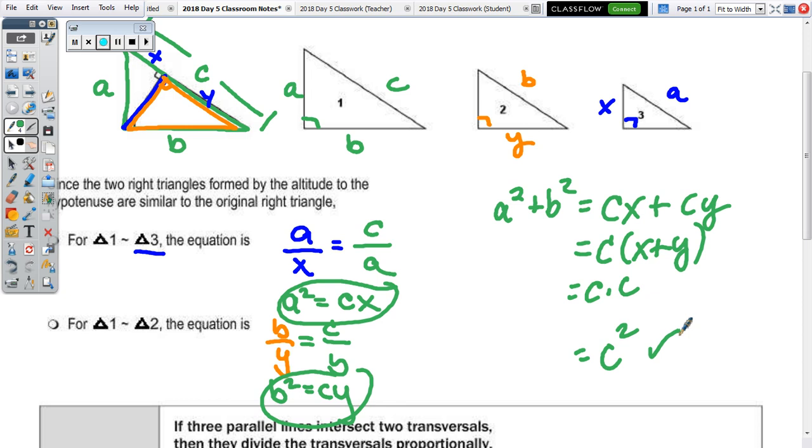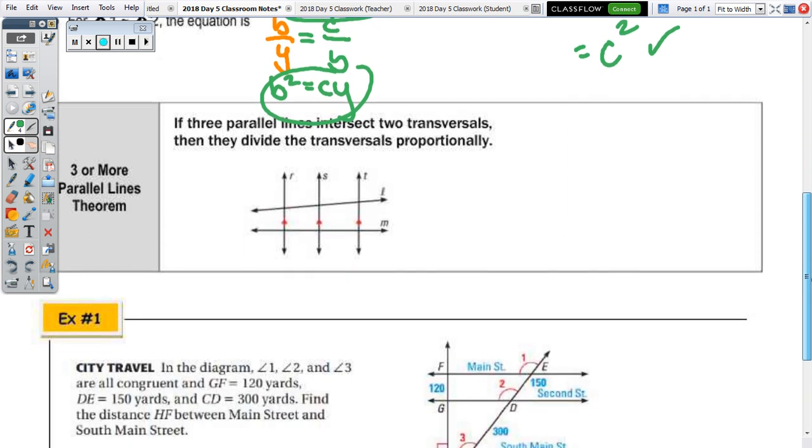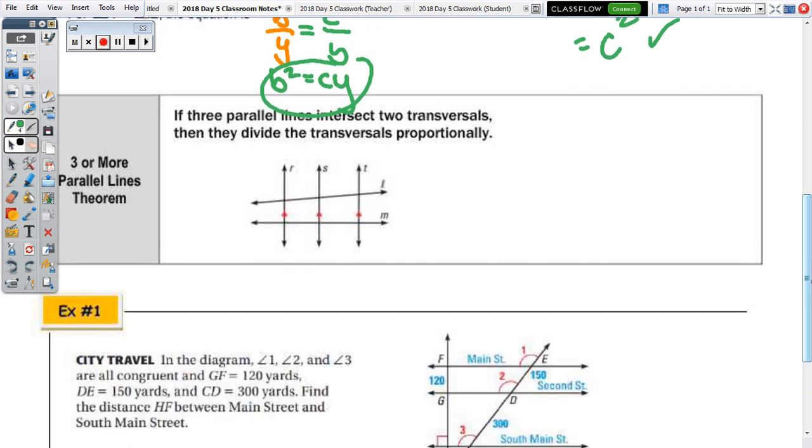Take a moment to read the three or more parallel lines being intersected by some transversal theorem. So it says that if three parallel lines intersect two transversals, then they divide the transversals proportionally. So, in this diagram, L is a transversal and M is a transversal. So, the ratio of, let's say, A to B equals C to D.